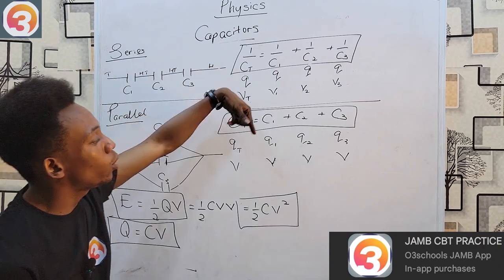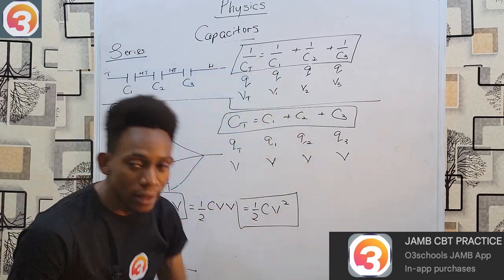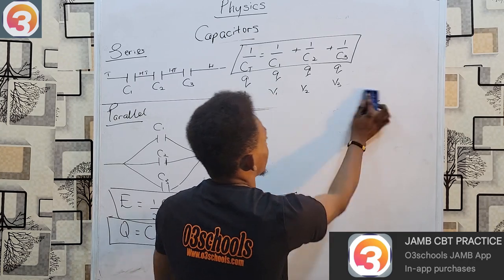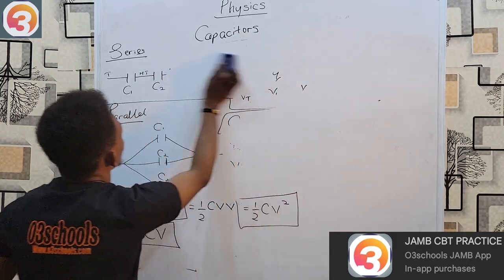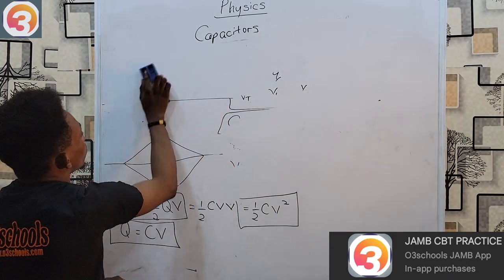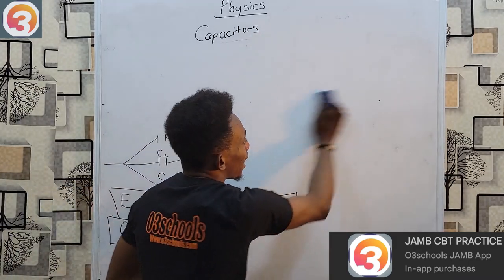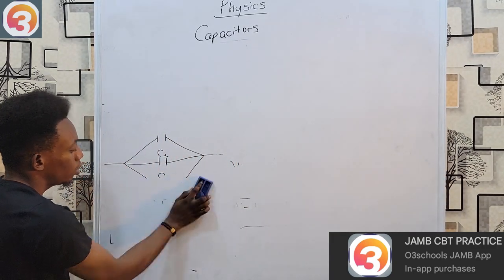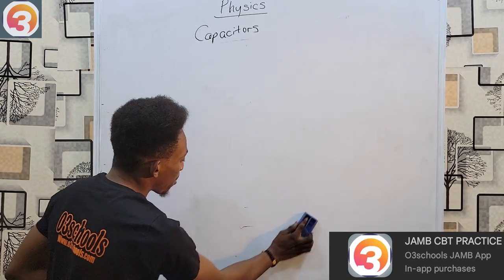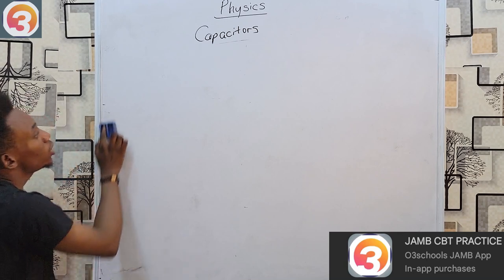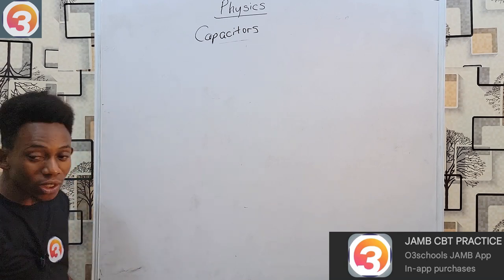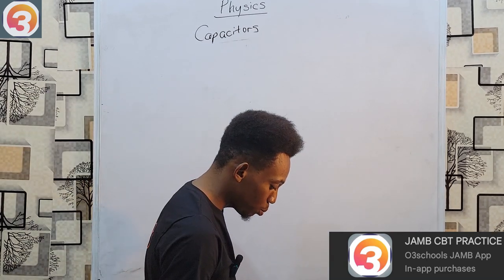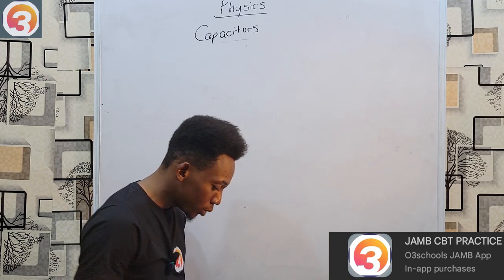To summarize: the charge on a capacitor is Q = CV; the energy is E = ½QV or ½CV². For series and parallel connections, we use the formulas discussed. Now let's go through past questions using our O3Schools JAMB app and apply the knowledge we've just gained.